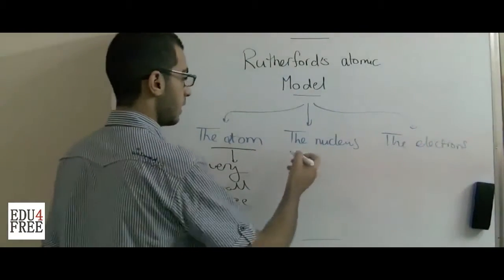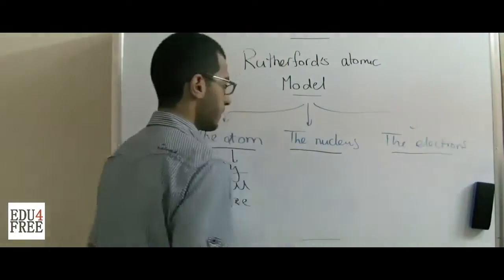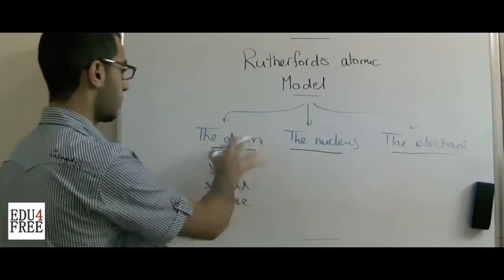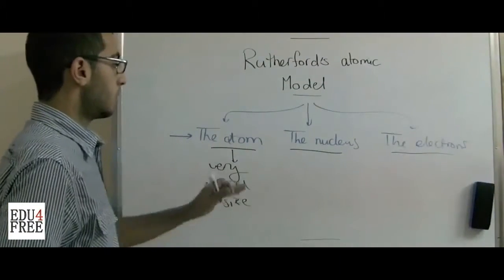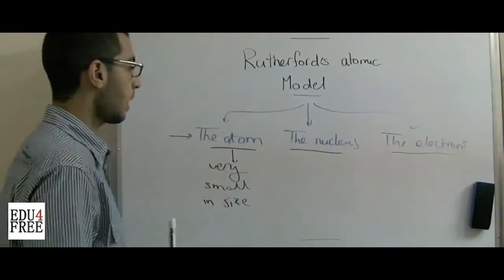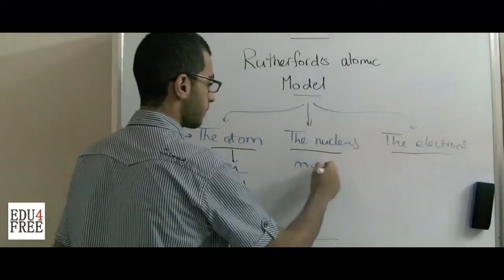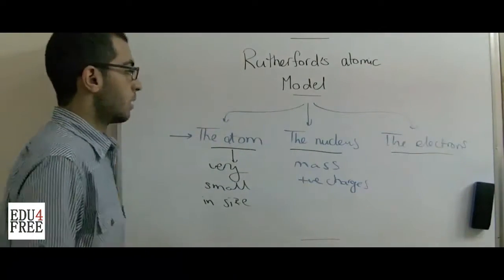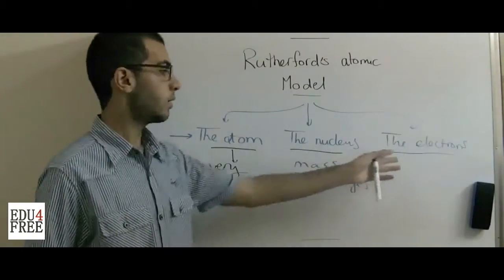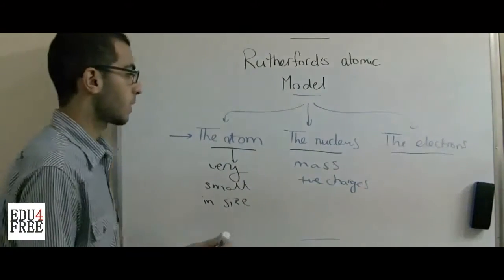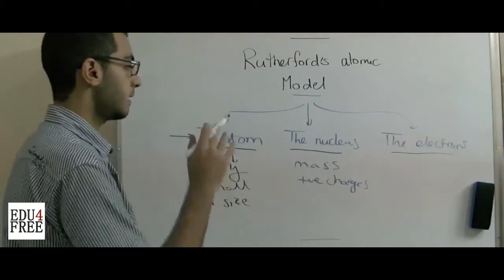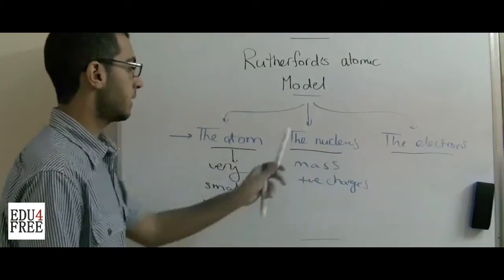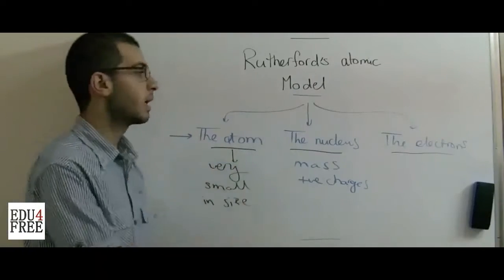The sun is the nucleus and the planets are the electrons. The nucleus is found in the center of the atom and it's also very small in size compared to the size of the atom. Most of the mass and the positive charges are concentrated in the nucleus. Also, the distance between the nucleus and the orbits of the electrons is vast. We conclude from this that the atom is not equally dense.